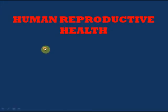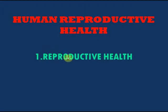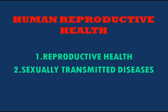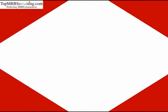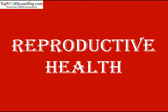Hello friends. The next chapter is Human Reproductive Health, which includes 3 lessons: 1st is Reproductive Health, 2nd is Sexually Transmitted Diseases, and 3rd is Infertility. So let's begin with the 1st chapter, Reproductive Health.